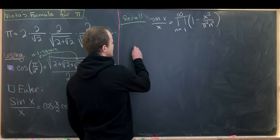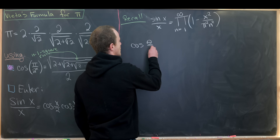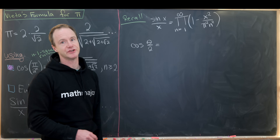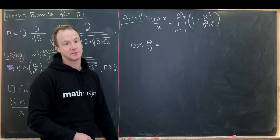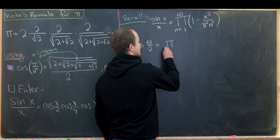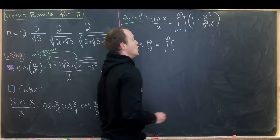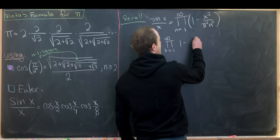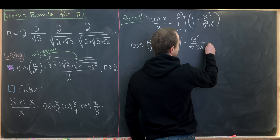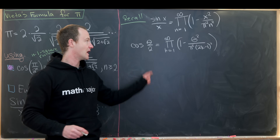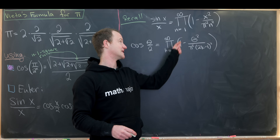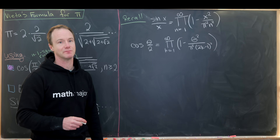We also use the expansion of cosine of θ over 2. That function has roots at odd integer multiples of π, not even multiples, since cosine equals plus or minus 1 there. So we can expand it as the product as k goes from 1 to infinity of (1 minus θ² over π²(2k−1)²). This follows because the function is zero when θ is an odd multiple of π, encoded in this root factorization.